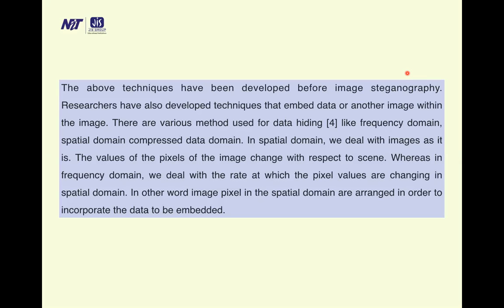Researchers have developed techniques that embed data or another image within an image. There are various methods used for data hiding: frequency domain, spatial domain, and compression domain. In the spatial domain, we deal with images as they are — the pixel values change with respect to the scene. In the frequency domain, we deal with the rate at which pixel values are changing. In the spatial domain, image pixels are arranged in order to incorporate the data to be embedded.